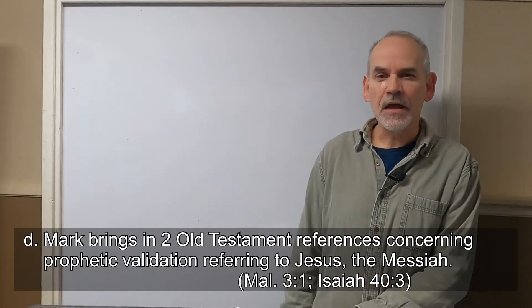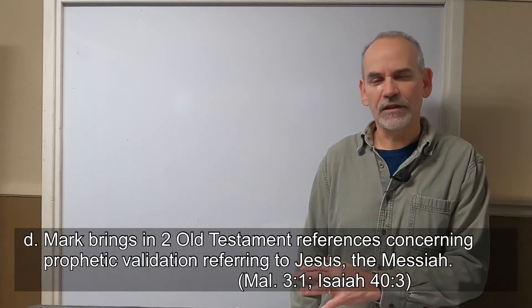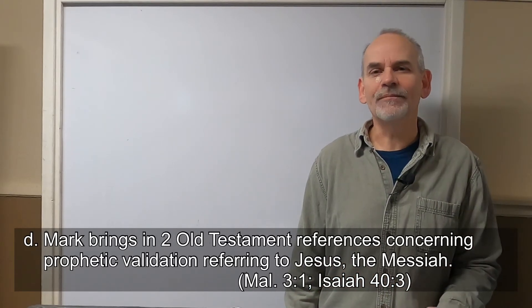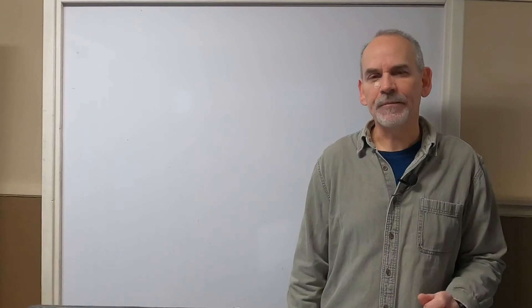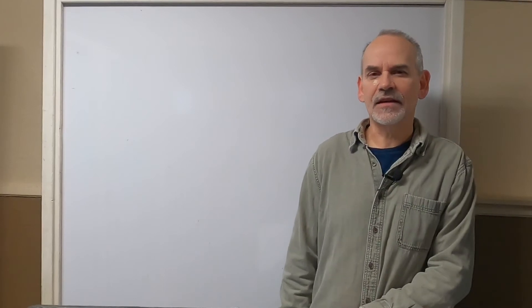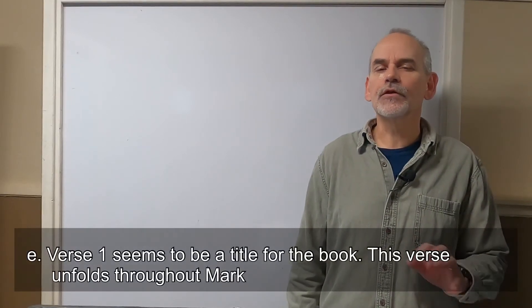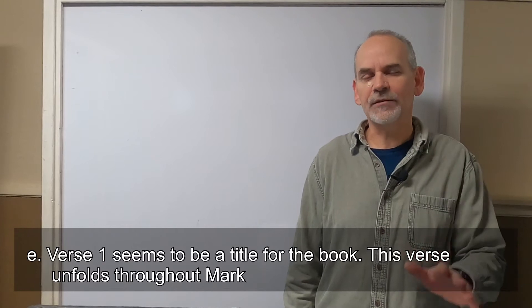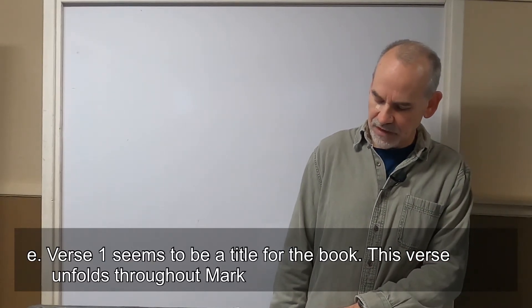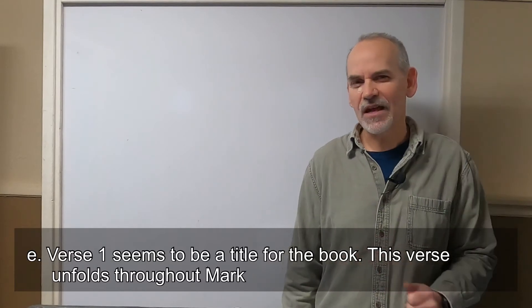Finally, Mark brings in two Old Testament references concerning prophetic validation referring to Jesus. And Mark notes that it's Isaiah, but really it's the prophets including Isaiah. The first one is Malachi chapter three, one, and then Isaiah chapter 40, verse three. Some versions of the Bible say as it is written in the prophets. Another thing to consider is that verse one seems to be a title for the book. This verse unfolds throughout the entire gospel of Mark. And so he shares with us all the proof of Jesus as the son of God.